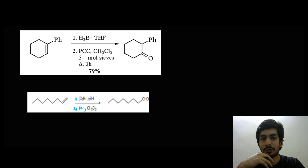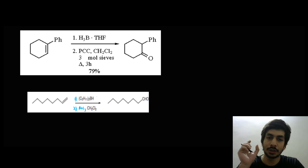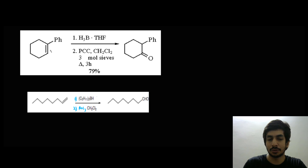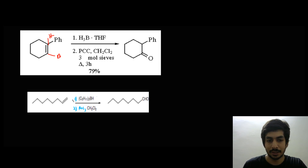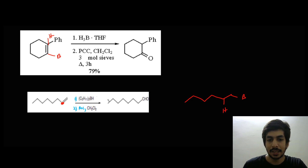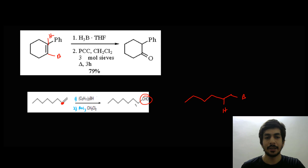Two more important PCC transformations: PCC can oxidize carbon-boron bonds. After hydroboration, the boron attaches to the less hindered carbon. When PCC is added, the C-B bond is oxidized to give the corresponding ketone. Similarly, for a terminal alkene, boron attaches at the terminal end and hydrogen at the internal carbon. Treatment with PCC in dichloromethane then oxidizes the C-B bond to give the corresponding aldehyde.